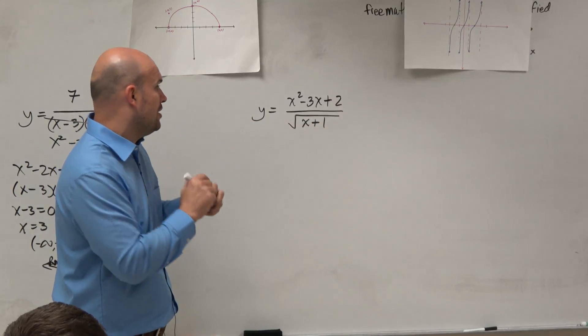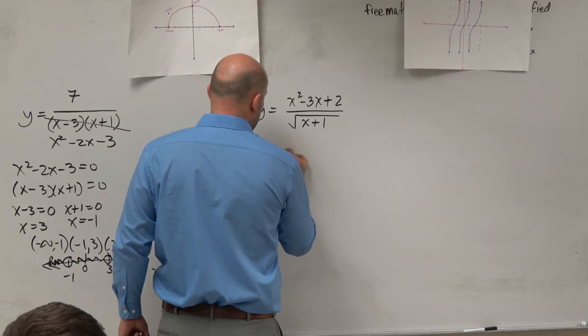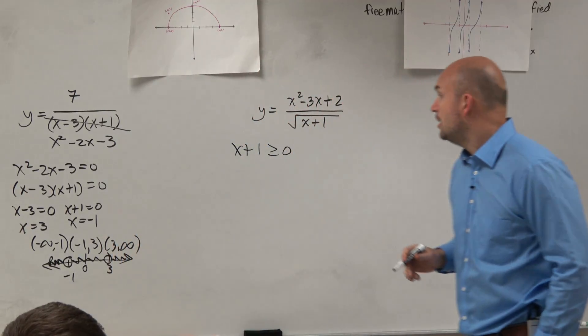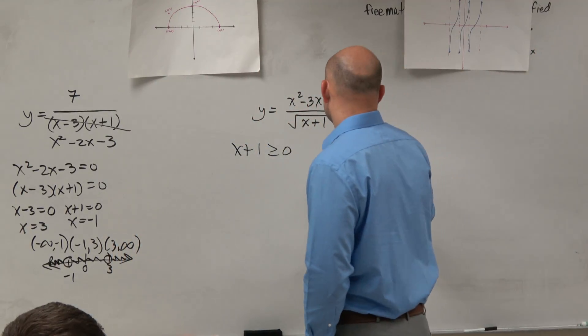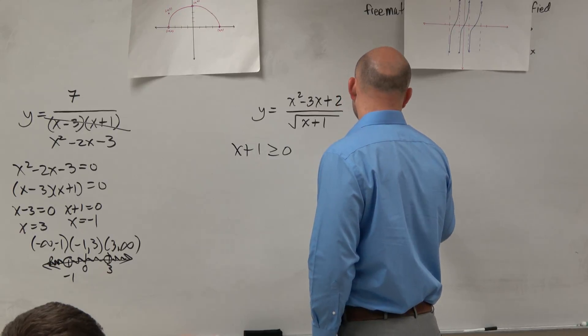So automatically, I see radical. x plus 1 has to be greater than or equal to 0. Got that. Oh, it's in the denominator. OK, square root of x plus 1 is equal to 0.